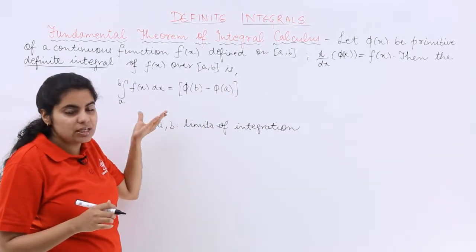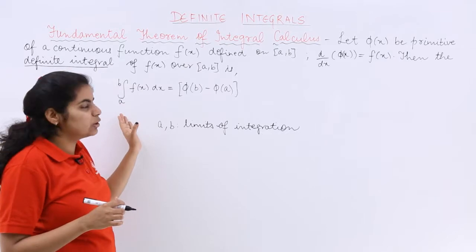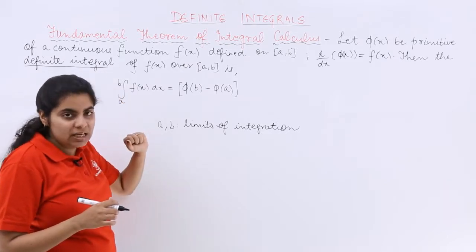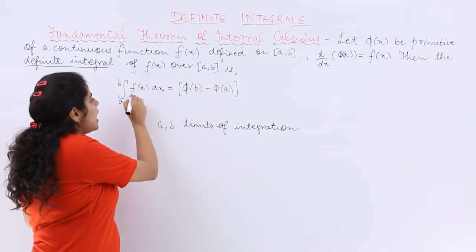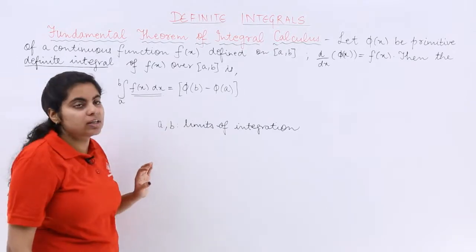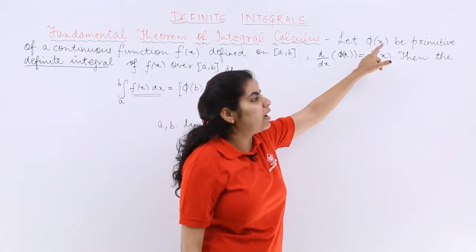Here it is ∫f(x)dx which is the limits from a to b. That is, lower is a, upper limit is b. And what you will do is f(x) integration is what? f(x) integration should be φ(x).